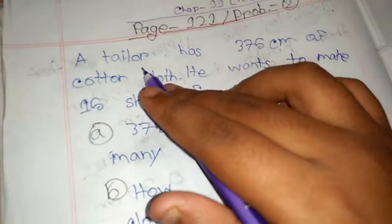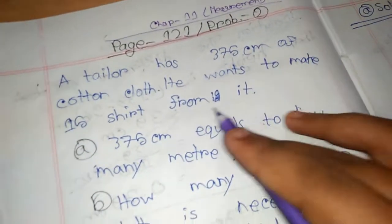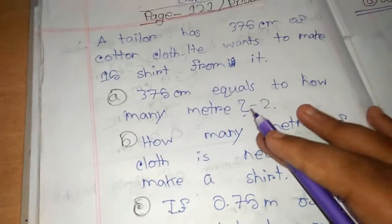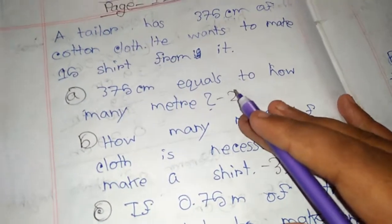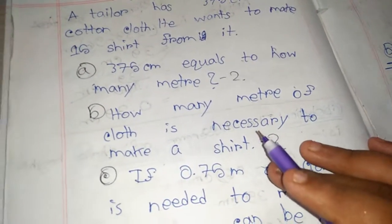Now I am reading the question. A tailor has 375 centimeters of cotton cloth. He wants to make 15 shirts from it. Question A: 375 cm equals how many meters? Question B: How many centimeters of cloth is necessary to make a shirt?